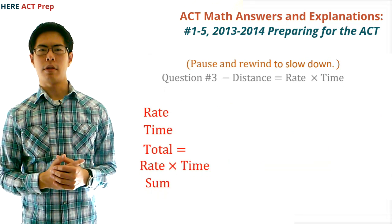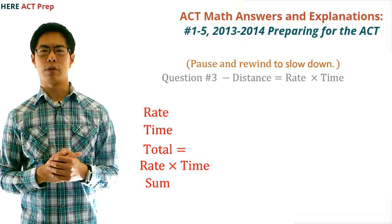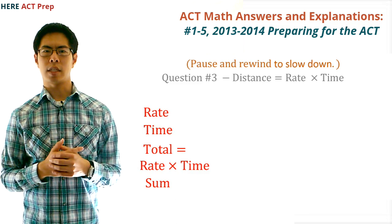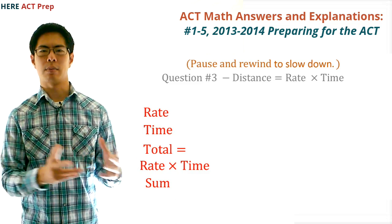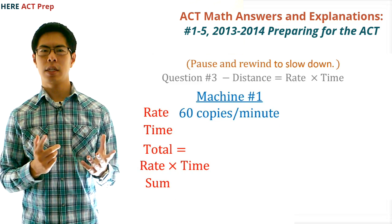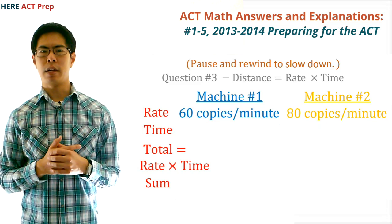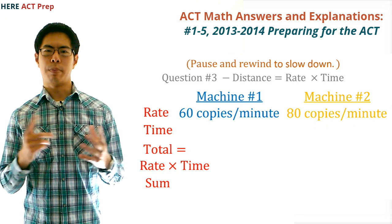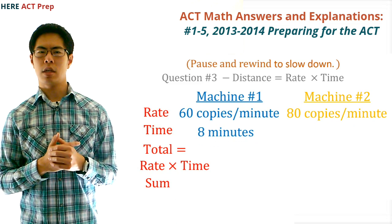Question number three. The concept this question tests is distance equals rate times time — or in this case, total copies equals rate times time. Here we have 60 copies per minute for the first machine and 80 copies per minute for the second machine. We're told that both machines stop eight minutes after the first machine starts.